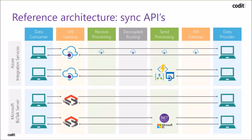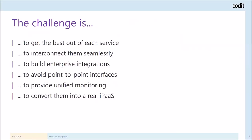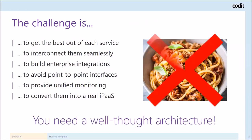The challenge now is really getting the best out of each service and making sure they interconnect seamlessly together so you can build a real enterprise integration. What you definitely need to avoid — and thanks to this architecture you can avoid it — is point-to-point and spaghetti interfacing. Make sure you have a well-thought-out architecture that provides unified monitoring, so you can convert these four technologies and the surrounding technologies into a real integration platform as a service.